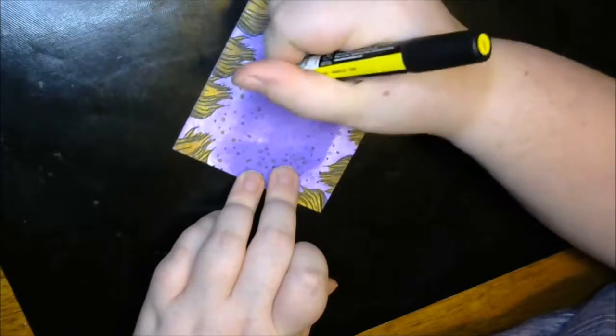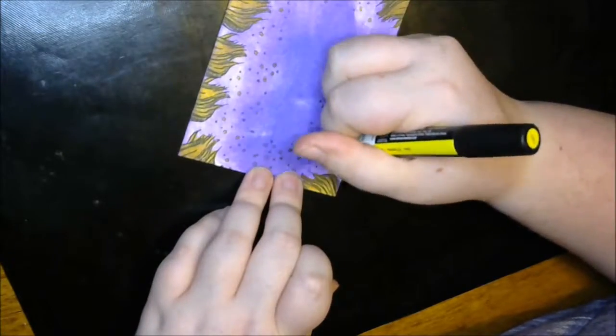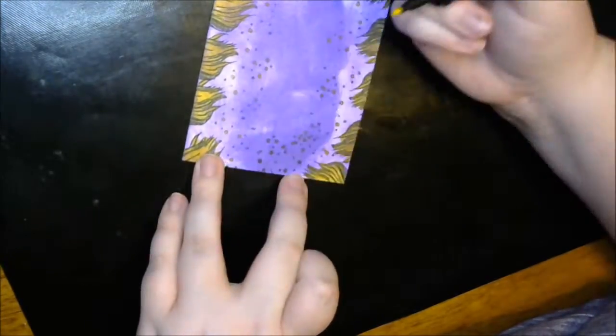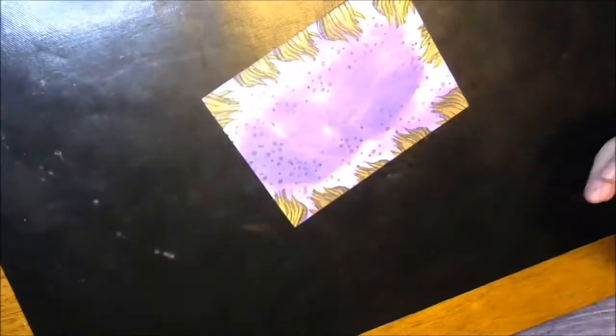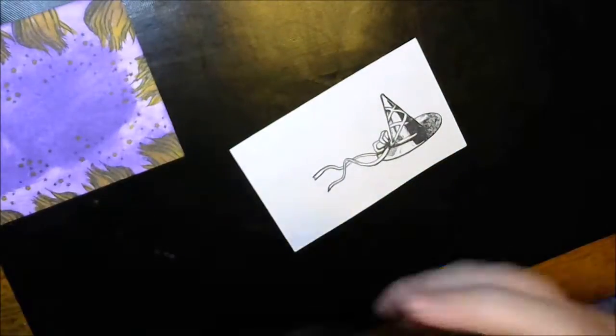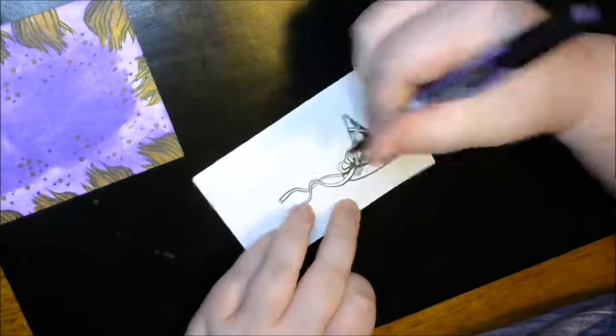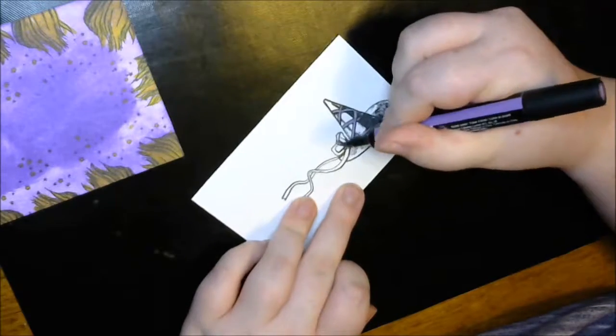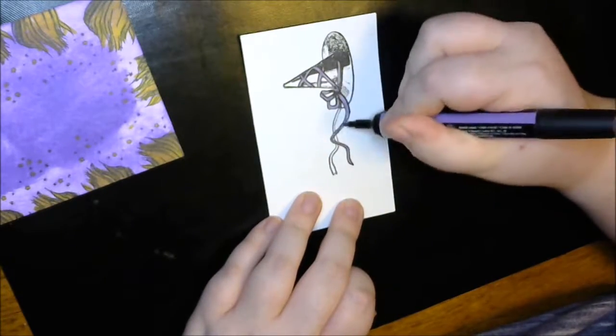But because that purple is in the background, I didn't really need an extra color because the purple did an excellent job. Then I'm taking a yellow Winsor and Newton alcohol marker and dotting all those little stars that are just the outline. Some of them are solid and some are just the outline, so I dotted the outlined ones.